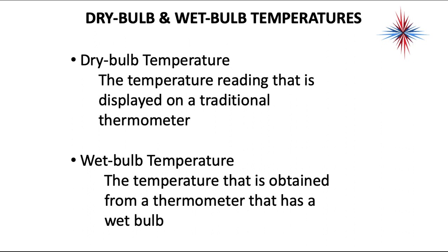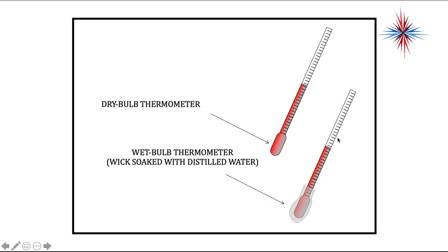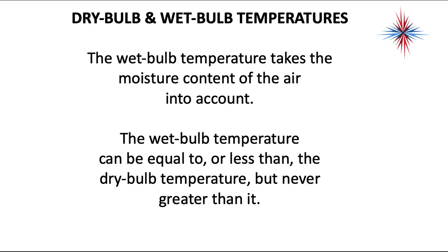We have to understand dry and wet bulb temperatures. A dry bulb temperature is the reading displayed on a traditional thermometer — it does not take moisture into account. The wet bulb temperature is obtained from a thermometer that has a wet wick over the end of it; it does take moisture into account. A dry bulb thermometer could show one reading in the same room as a wet bulb thermometer. The wet bulb temperature can be equal to or less than the dry bulb temperature, but never greater. As water evaporates, it cools whatever it's evaporating from — that's why the wet bulb is always equal to or less than the dry bulb.